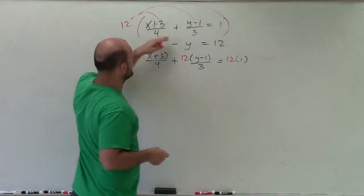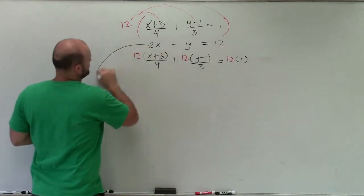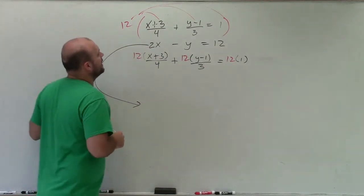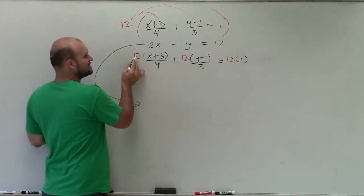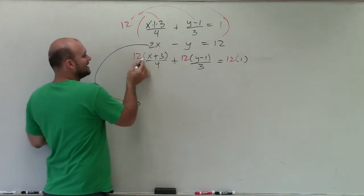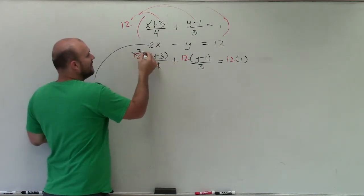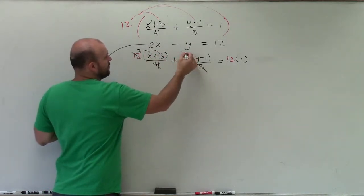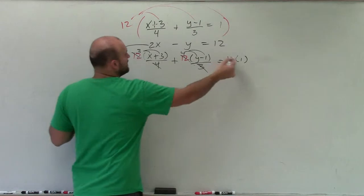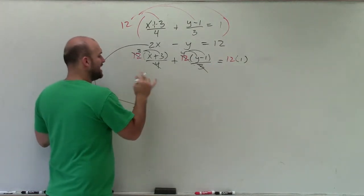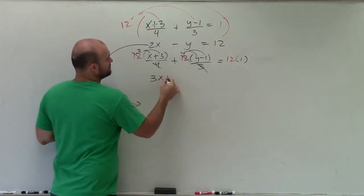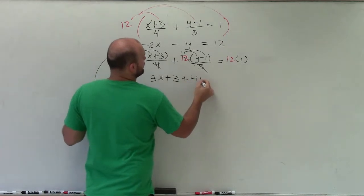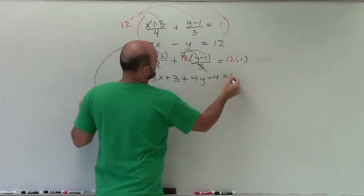So we'll work on this first, and then I'll bring this back down, right? I can't forget about that guy. So therefore, when I'm solving this, I can multiply this through, or I can just say, well, 12 divided by 4 equals 3. Now I can distribute the 3. That reduces to 4. Now I can distribute to 4, and that obviously becomes 12. Now I have an equation of 3x plus 3 plus 4y minus 4 equals 12.